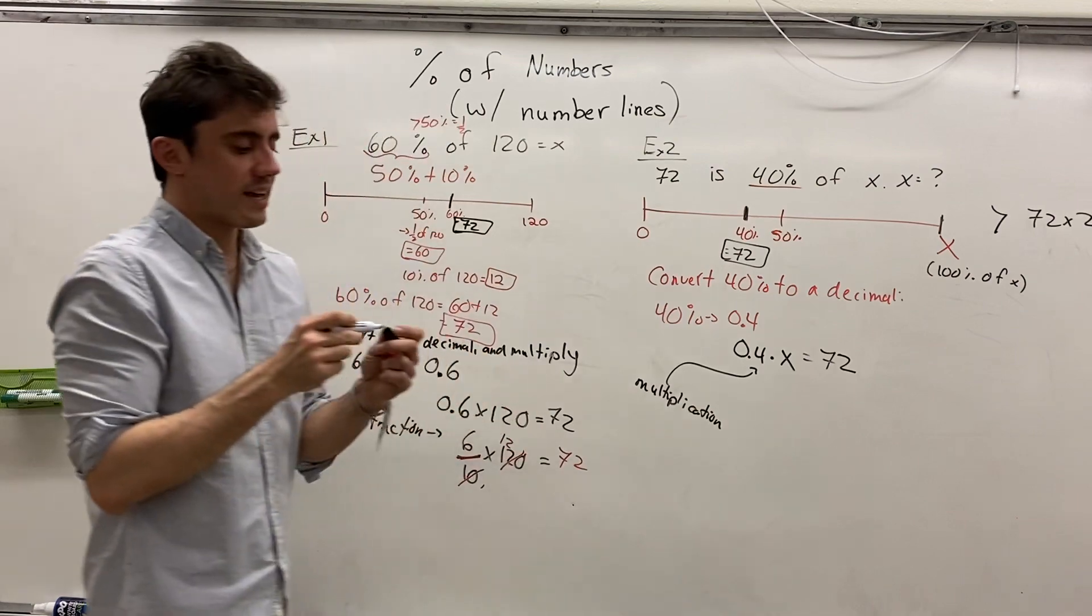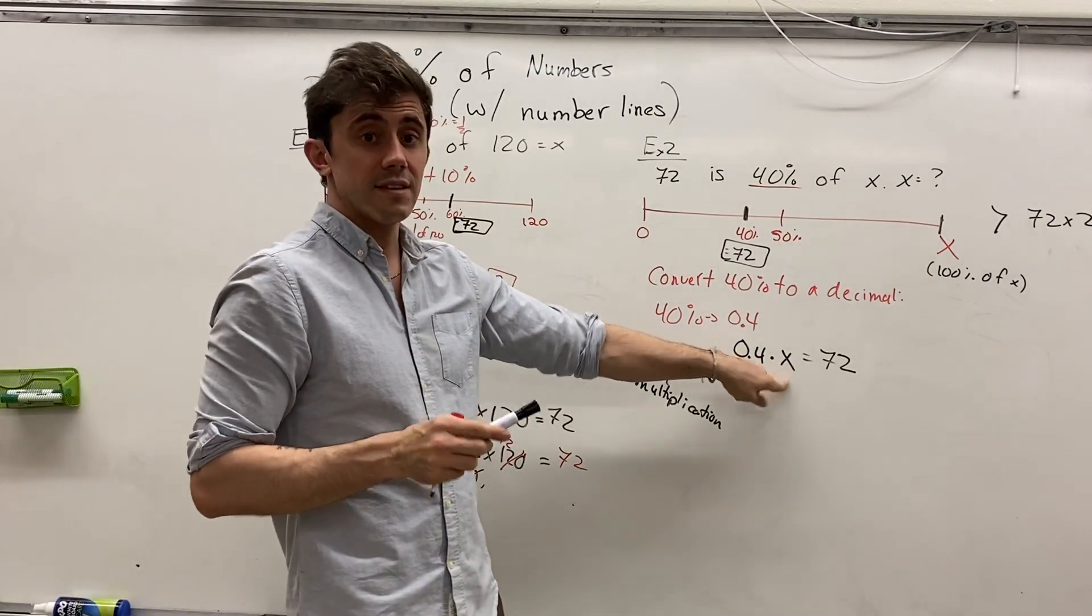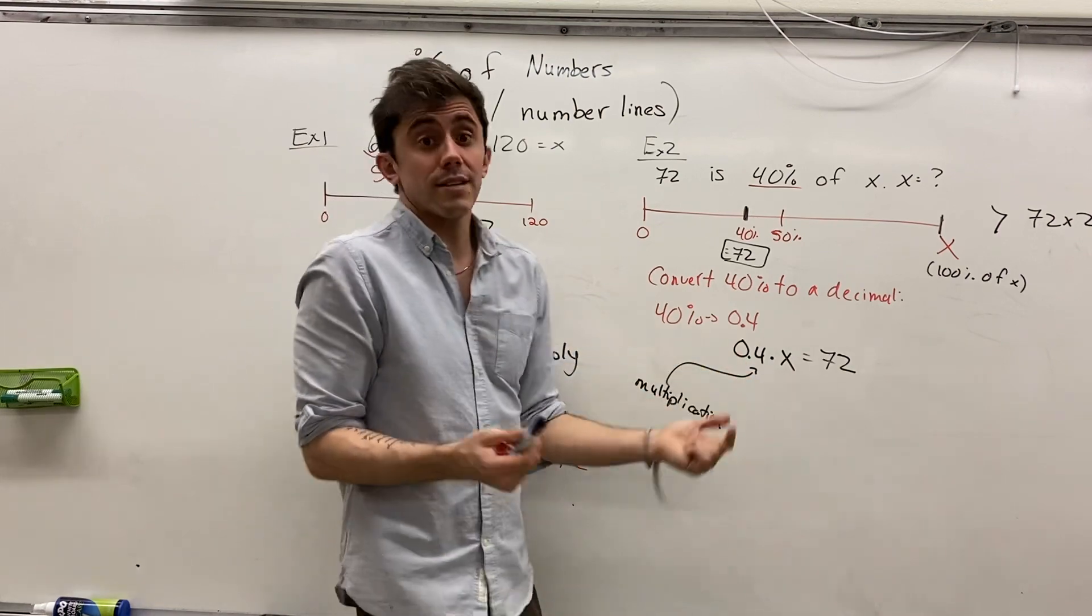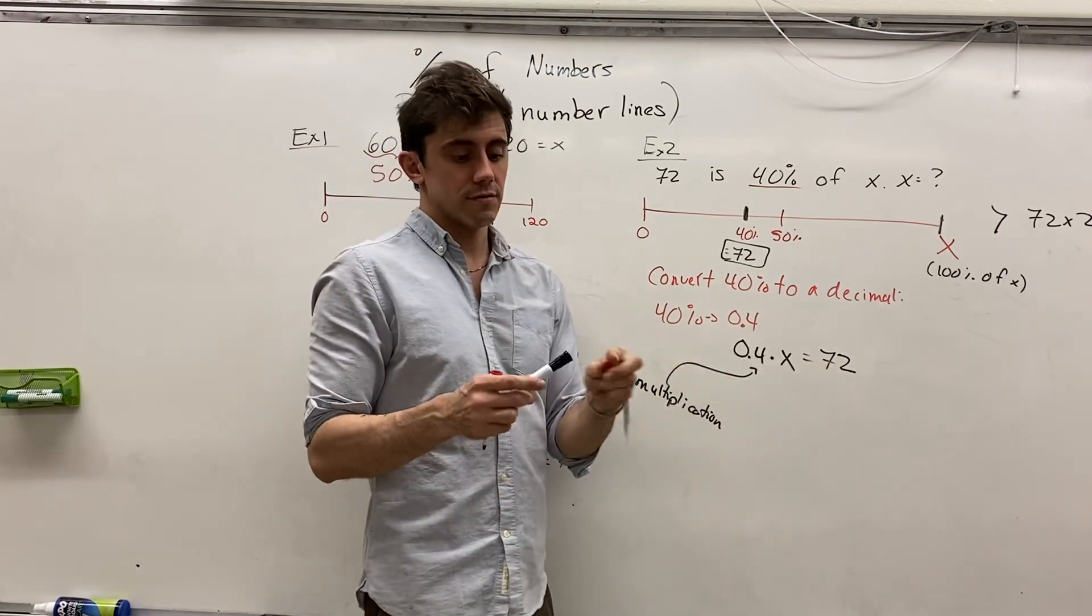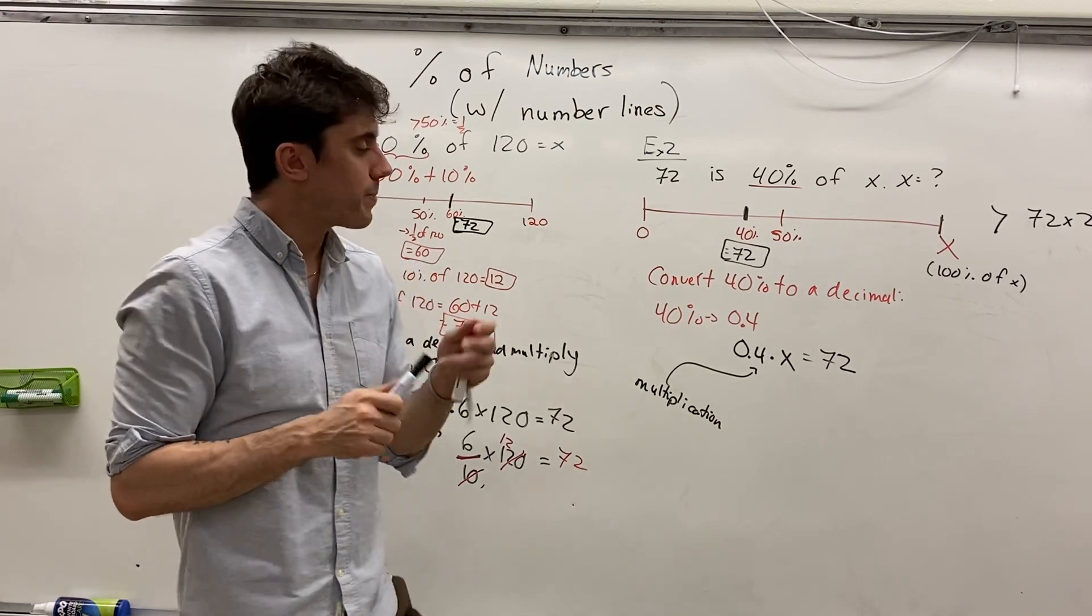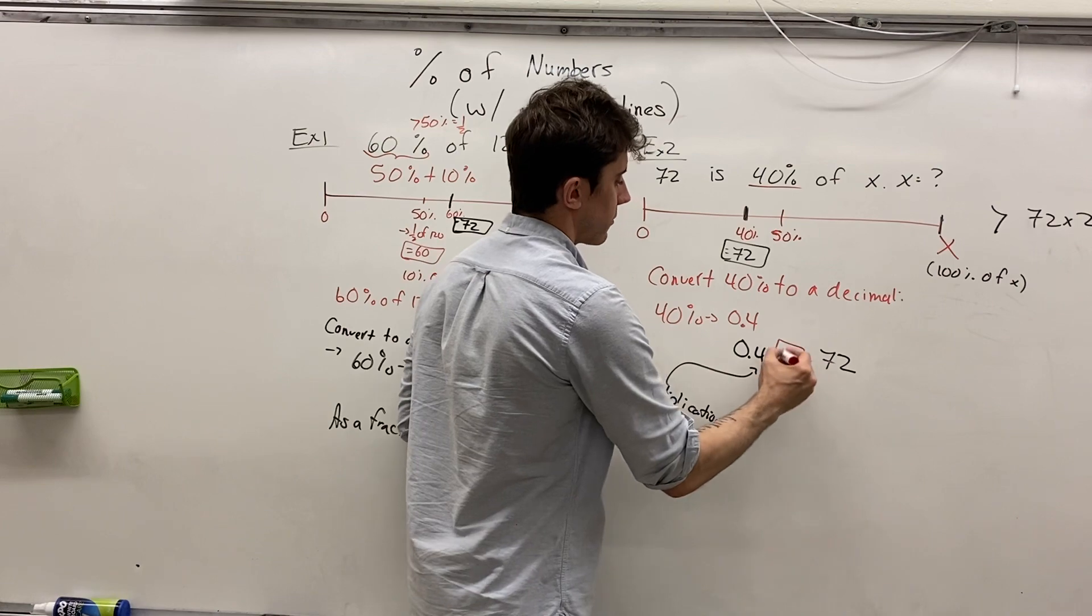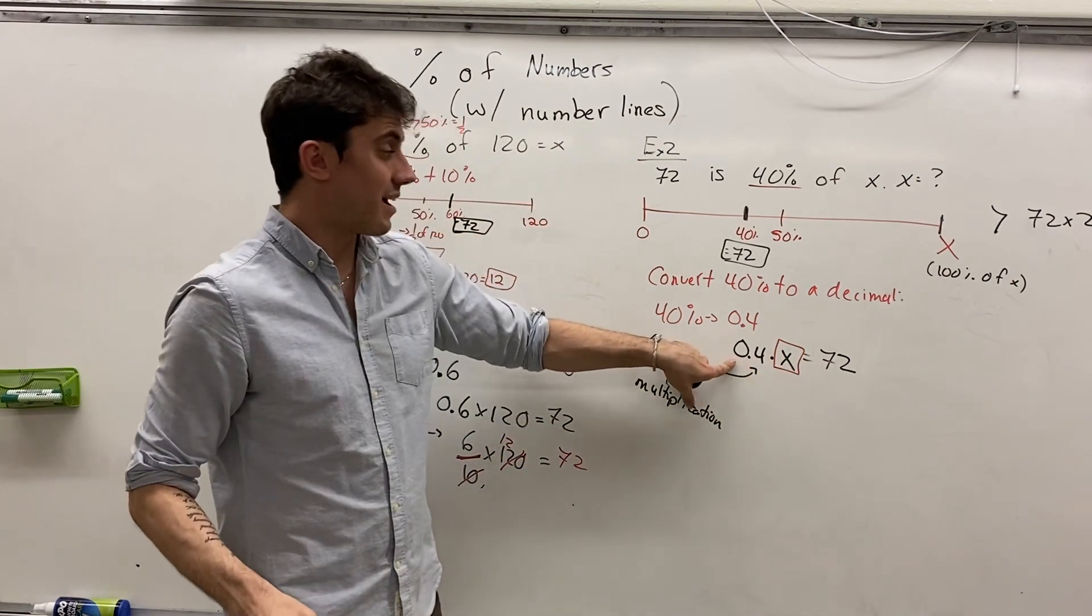We have a nice equation established. We have 0.4 times x. That is to say, 0.4 times something is 72. Now, this is just a type 1 algebra equation. If we want to solve for the value of x, this value here, we just want to get rid of the times 0.4.